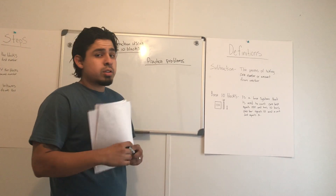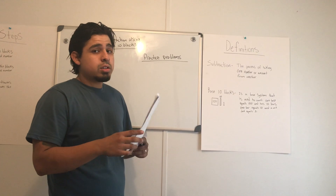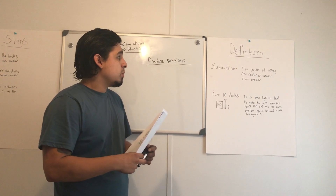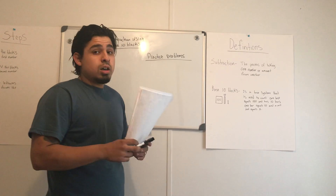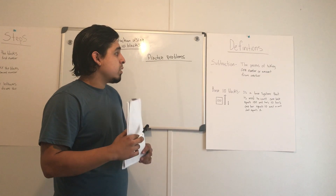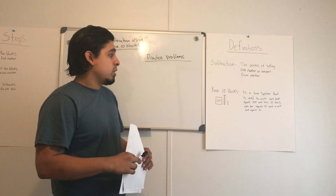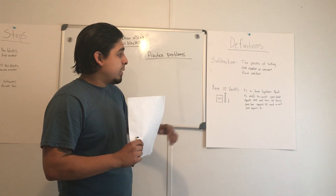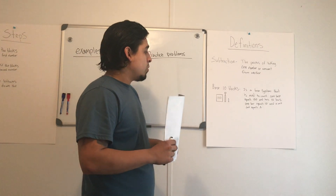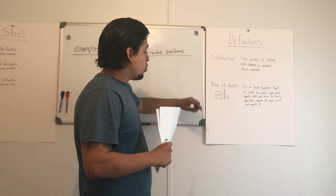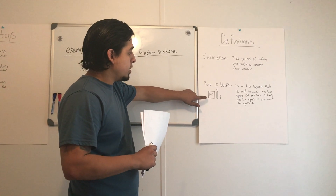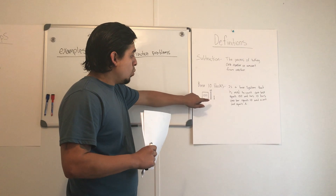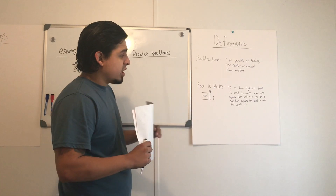The first thing I want y'all to do is take out y'all's journals so that y'all can write down the definitions and steps. The first definition we're going to be going over is subtraction. Subtraction is a process of taking one number or amount from another. Base 10 blocks is a base system that is used to count. One square is going to equal 100, one bar is going to equal 10, and one cube is going to equal 1.